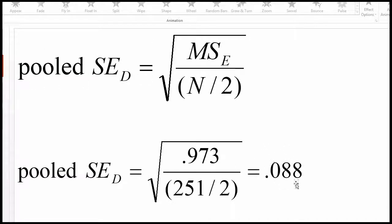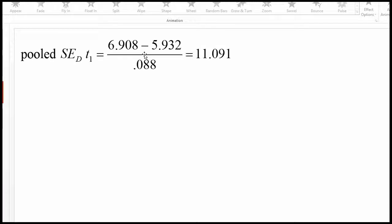So in this case here, I've inputted the 0.088 into the denominator associated with this particular simple main effect, 6.908 minus 5.932,